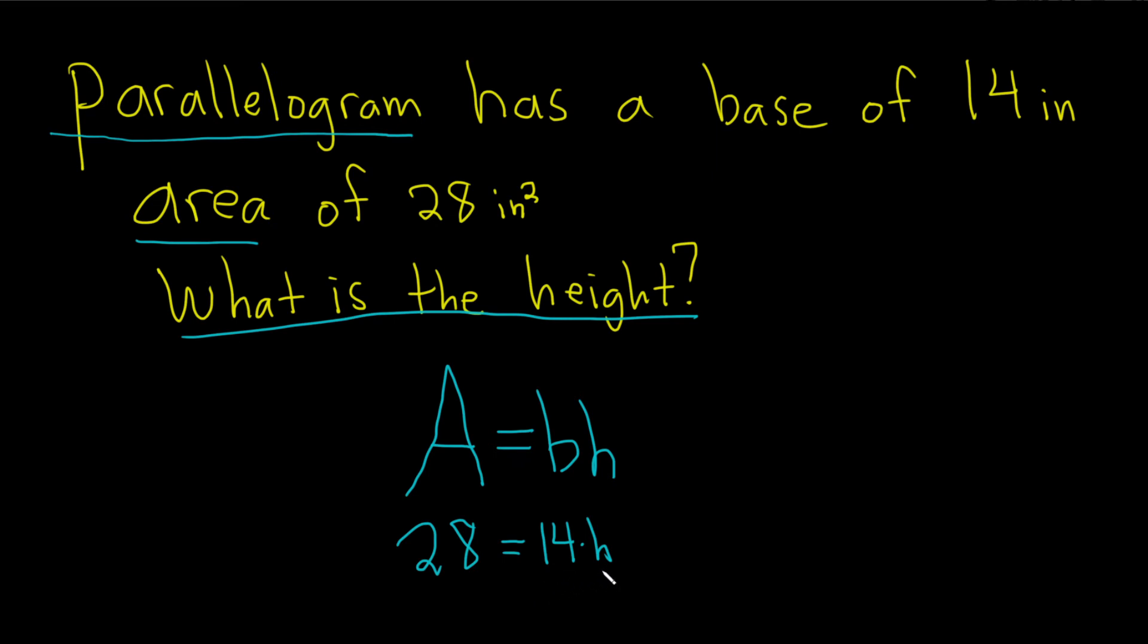Because the 14 is times the H, to get rid of it, we'll divide both sides by 14. So we end up with H equals, and then 28 over 14 is 2.